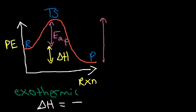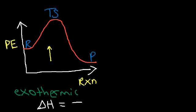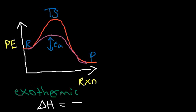What happens if we add a catalyst? The purpose of a catalyst is to speed up a reaction. Enzymes are biological catalysts that speed up reactions in living systems. If we add a catalyst, we get a new diagram where the activation energy is lower — before it was significantly higher. Adding a catalyst lowers the activation energy, and when you have a lower activation energy the reaction proceeds faster. That's how a catalyst speeds up a reaction — by lowering the activation energy.